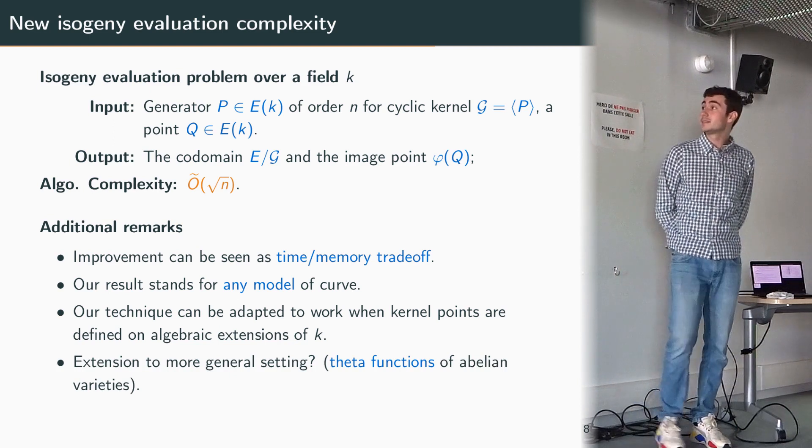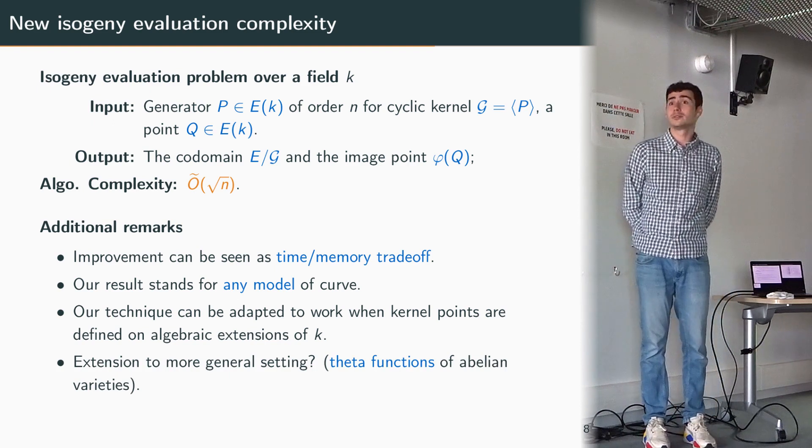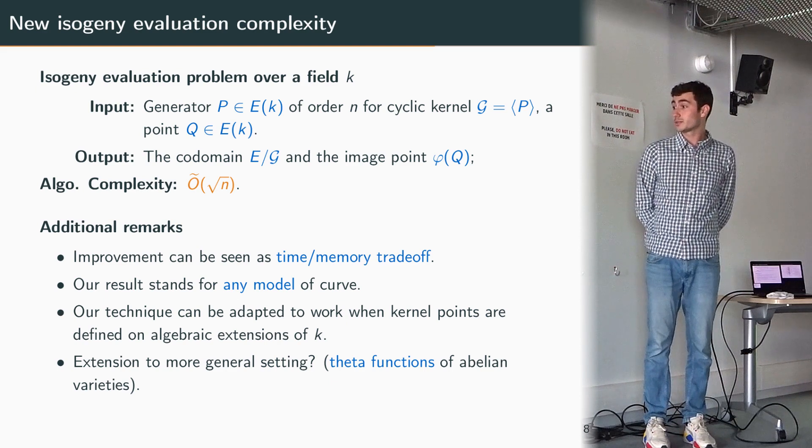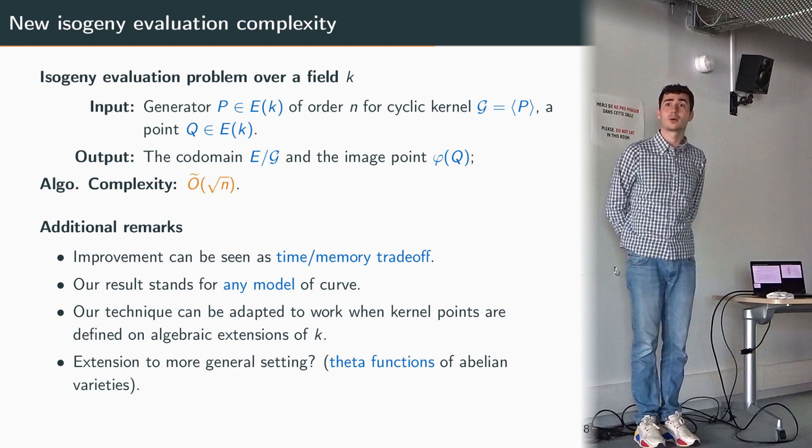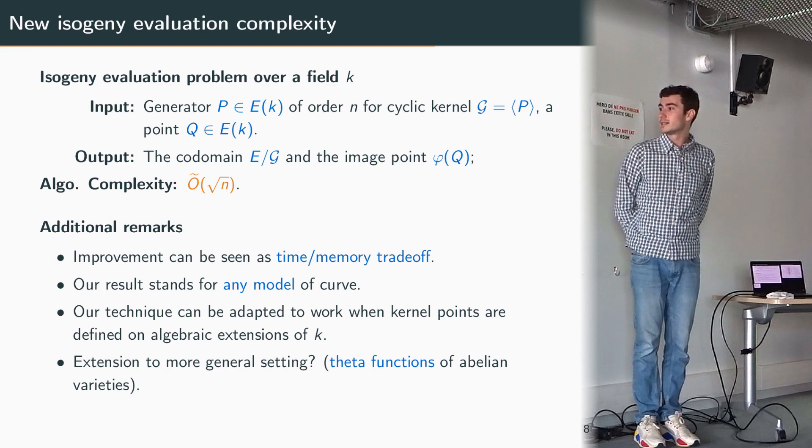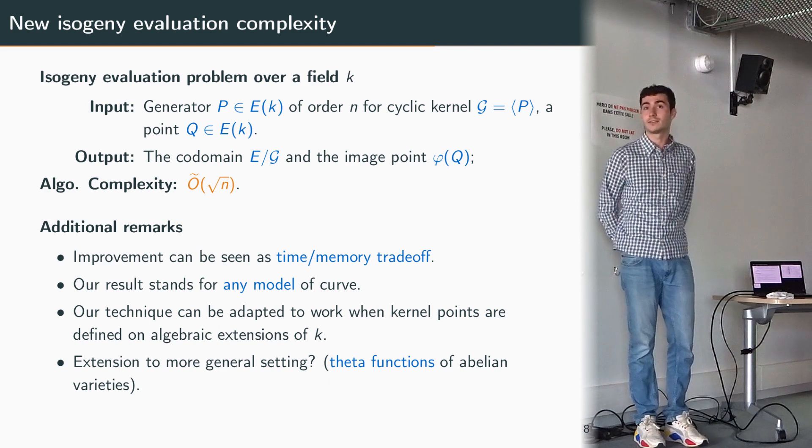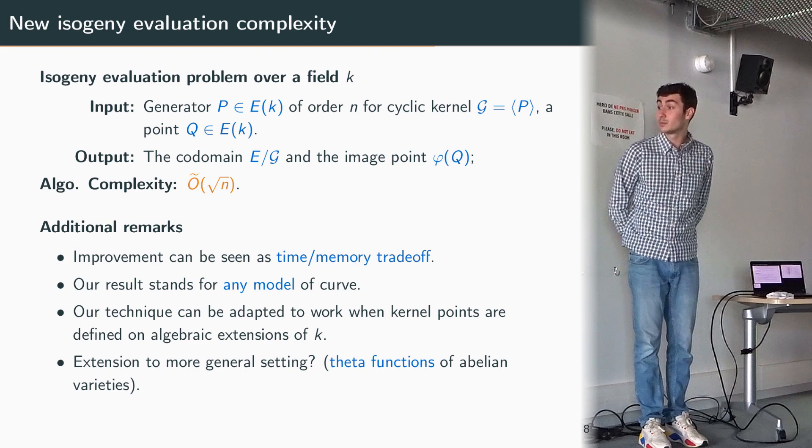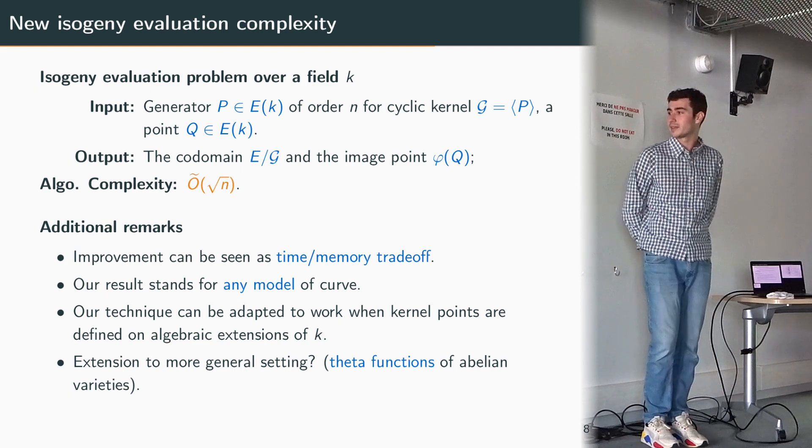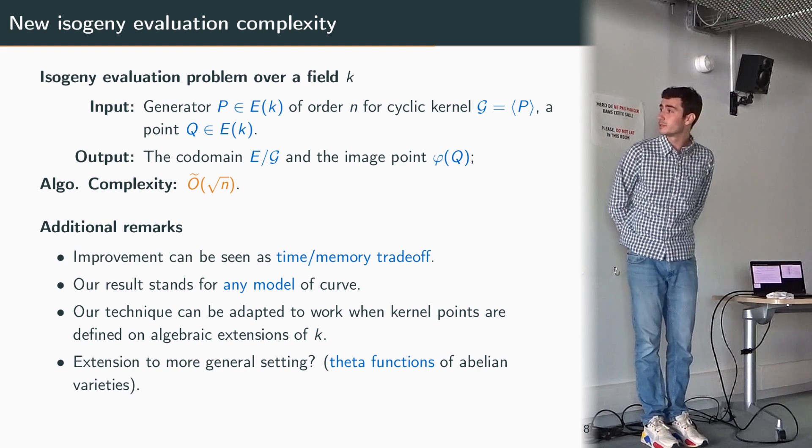Finally I conclude this theoretical part with an open question which is: can we extend this idea to a more general setting to use on different kinds of groups, different kinds of functions? I think the first example that comes to mind is the case of isogenies between abelian varieties of higher dimension, but of course this is a case that is more complicated and it involves some theta functions and that is why we did not push this in our paper.